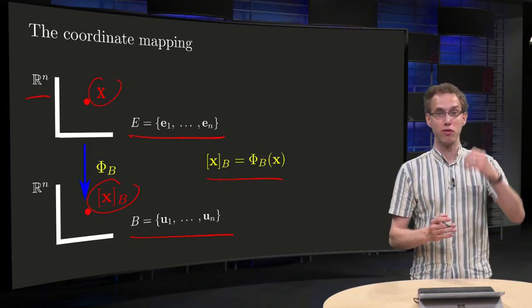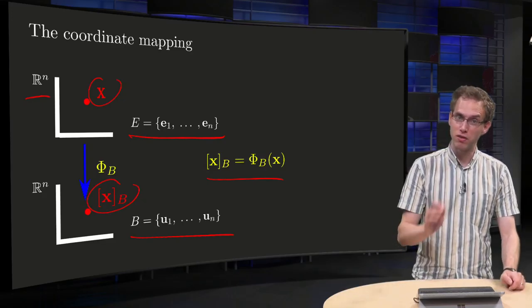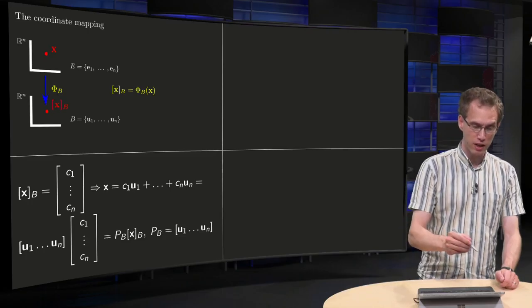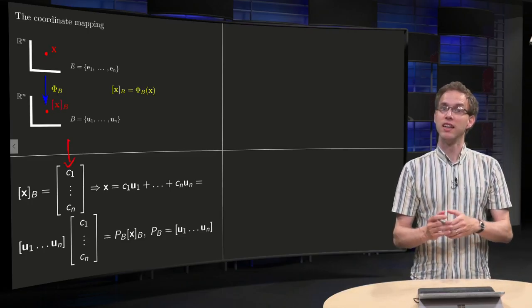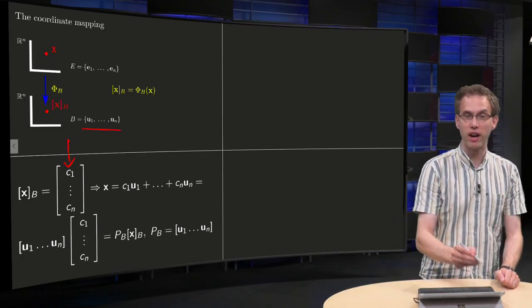We know φB is linear, goes from Rn to Rn, so there should be some matrix in between. So let's try to find this matrix. What do we do? Well, first we set xB equals [c1, ..., cn]. xB has n components because in the basis B there are n vectors.